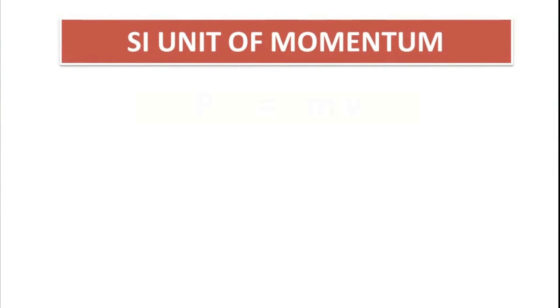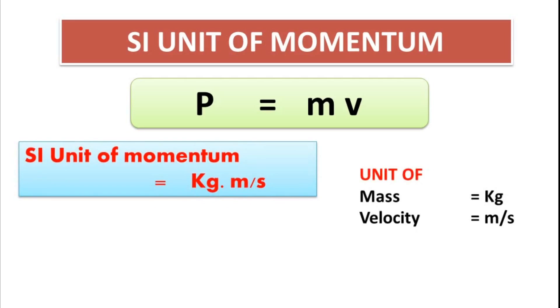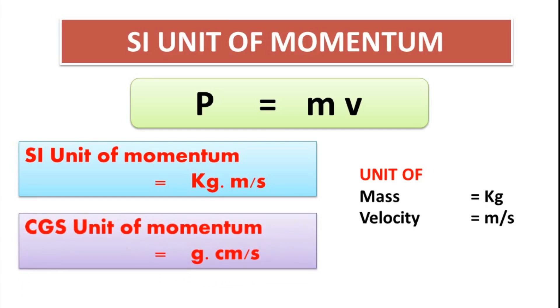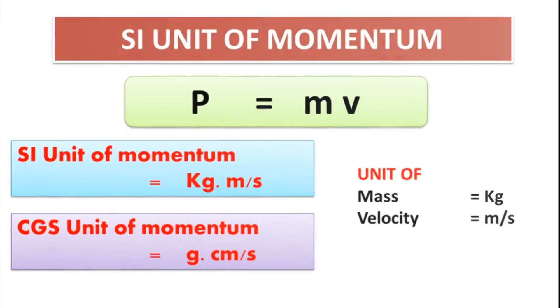Let us write the expression of momentum as P is equal to M into V. Where P is momentum, M is mass of the body and V is velocity of the body. Now, to find its SI unit, unit of mass is kilogram and unit of velocity is meter per second. So, unit of momentum is kilogram meter per second. And if CGS unit is asked, then CGS unit is gram centimeter per second.